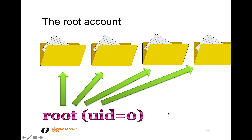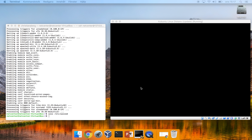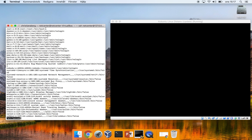The root account is specified by user ID 0. Whenever user ID 0 tries to access a file or folder, or tries to do something like removing a file or folder, that is always permitted. Root also has a line in /etc/passwd with user ID 0, group ID 0, and it starts bash when you successfully log in as root.